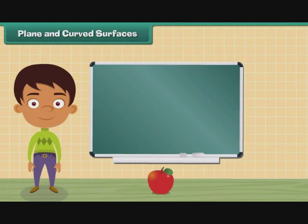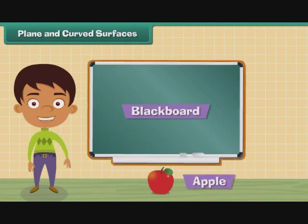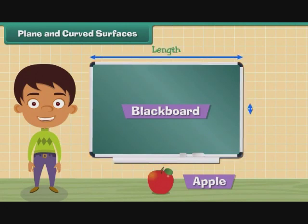The plane and curved surfaces. Look at these two objects: blackboard and an apple. Blackboard's plane surfaces are its surfaces which have length and breadth. When you touch the surface of an apple, its surface is not straight. This is curved surface.